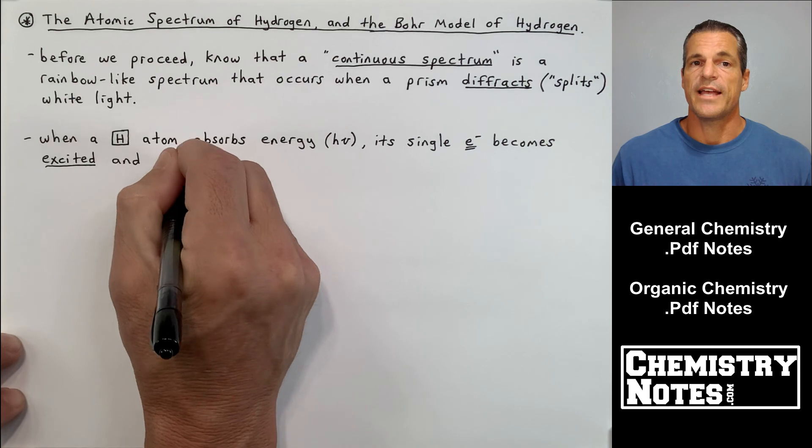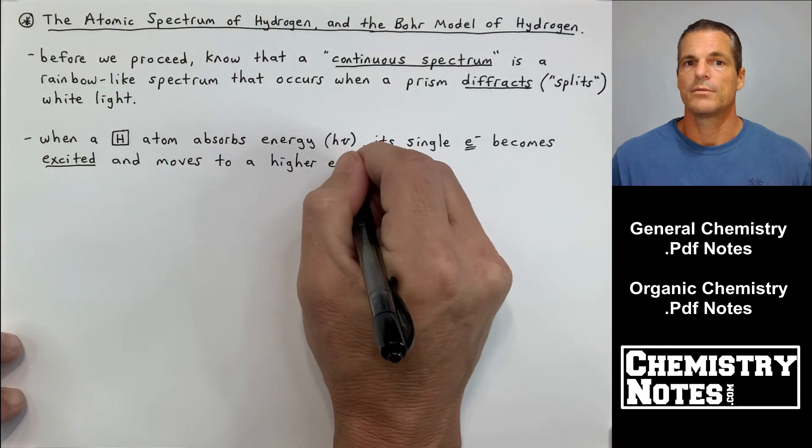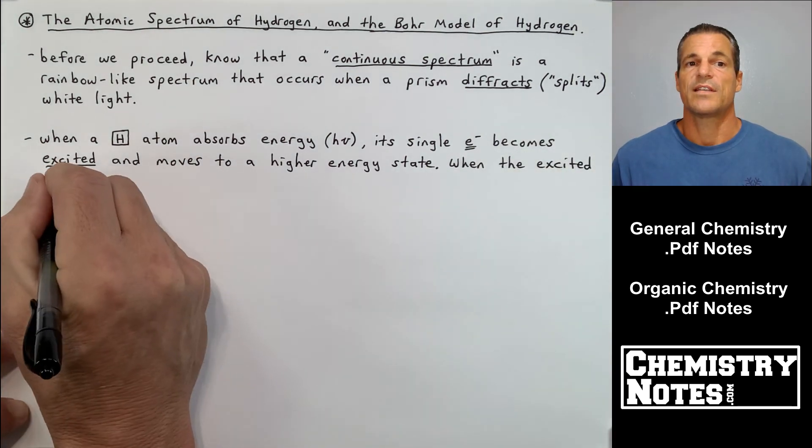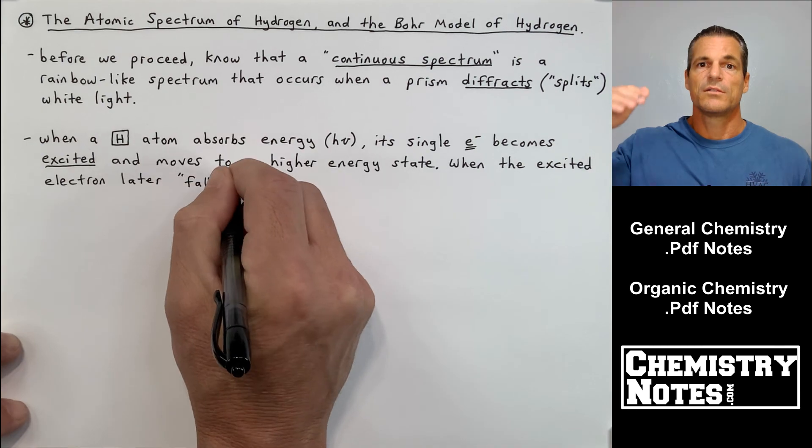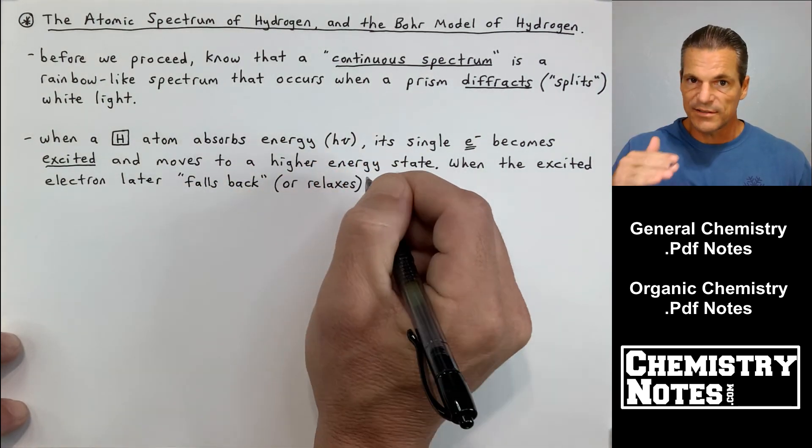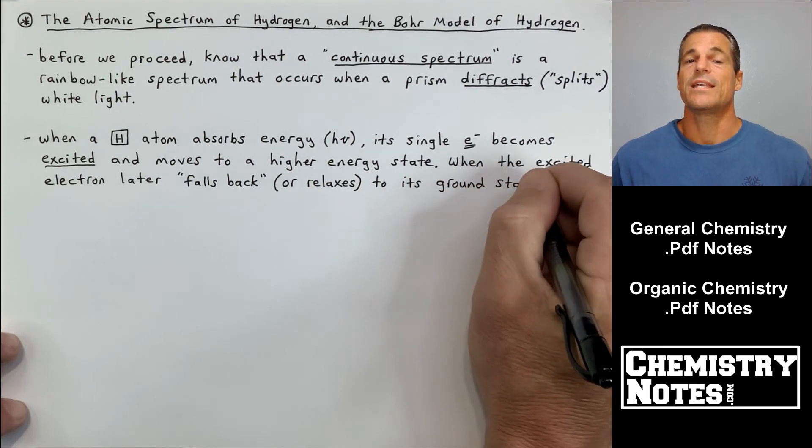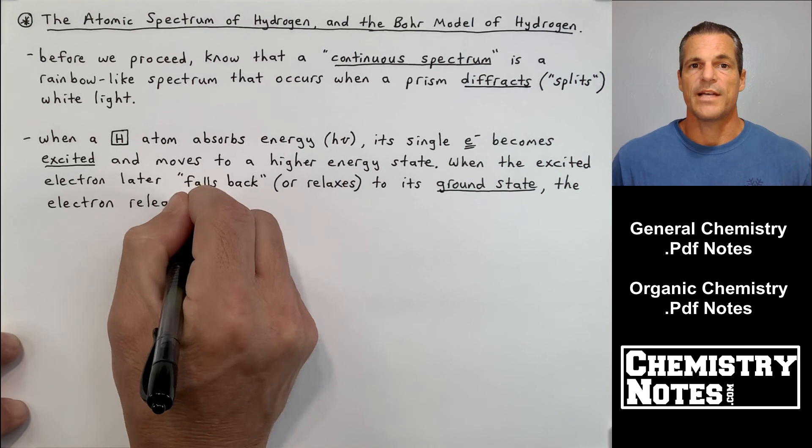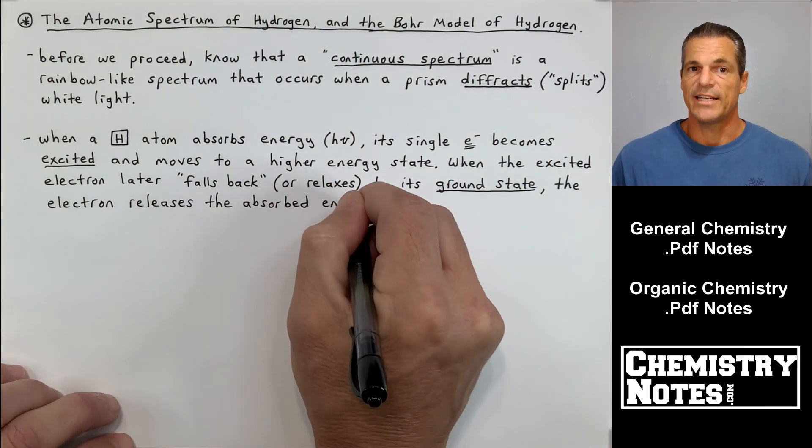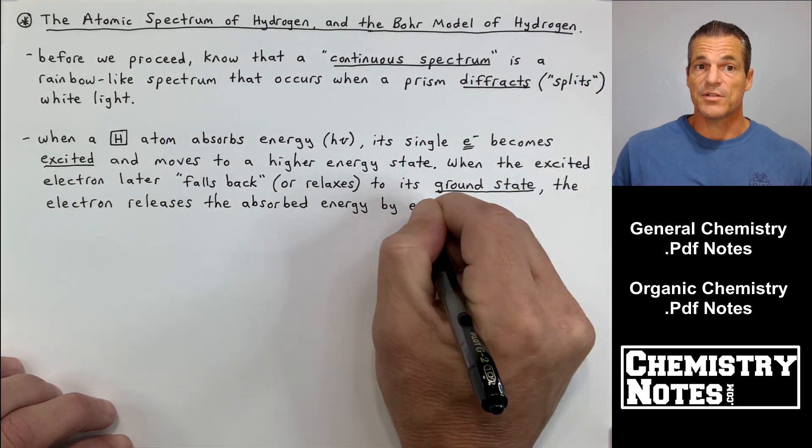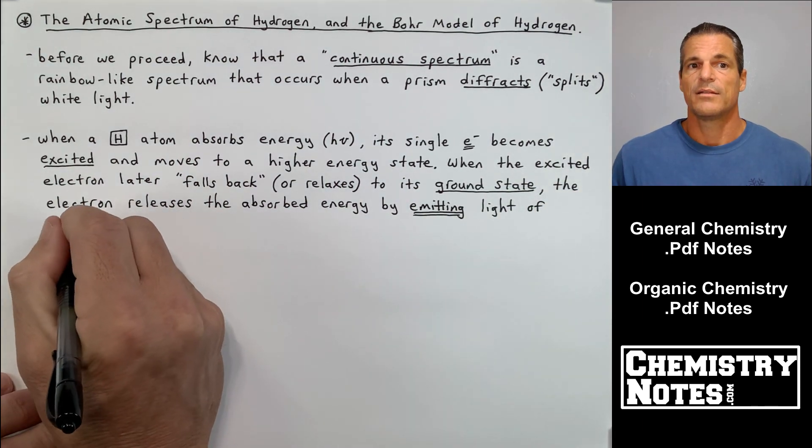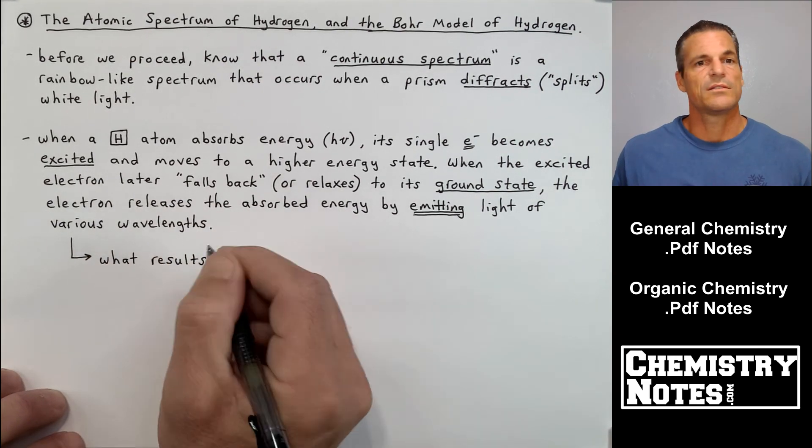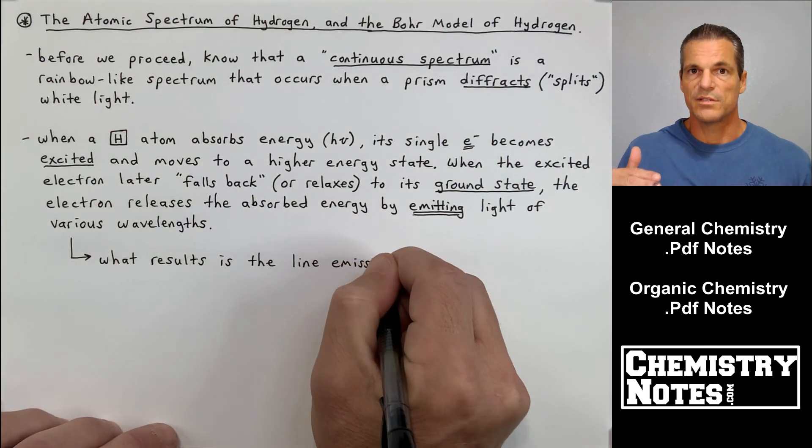When the hydrogen atom absorbs energy H nu, its single electron becomes excited and moves to a higher energy state. When the excited electron later falls back or relaxes to its ground state, the electron releases that same amount of absorbed energy by emitting light of various wavelengths or frequencies or energies. We have the equation that relates energy to frequency to wavelength from the last video.